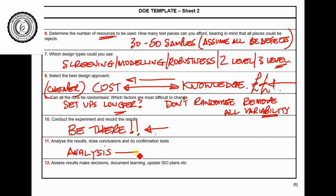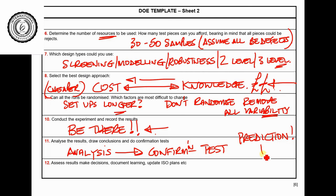And a key point: do a confirmation test. A confirmation test means you make a prediction — this is when you truly know how your process works — and then you hit it. That proves you've got real knowledge out of the experiment. A DOE gives you knowledge to predict and therefore hit targets. You've proved nothing until you've done the confirmation test. Whether you think your skill solved the problem or the DOE did, make a prediction — if you hit it, you've done a good job; if you don't, start again.